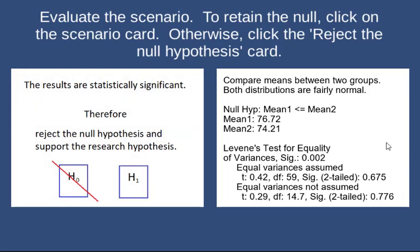For the second scenario, again we're comparing means between two groups. The null hypothesis is that the mean for group 1 is less than or equal to the mean for group 2. The evidence goes the opposite direction: group 1 mean is 76.72 and group 2 mean is 74.21. Levene's test for equality of variance significance is 0.002, indicating we should not assume equal variability. So we go to equal variances not assumed. The t-test is 0.29, degrees of freedom is 14.7, and significance two-tail is 0.776. Even dividing it in half, it's still much larger than our alpha level of 0.05.